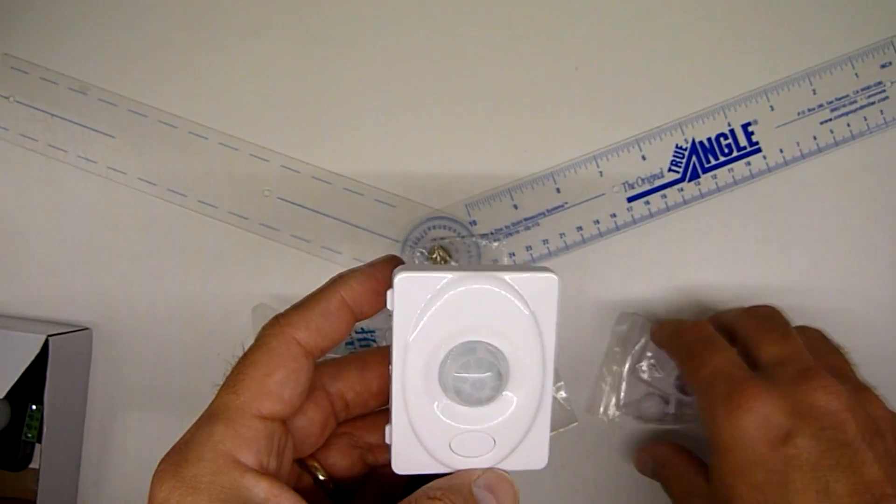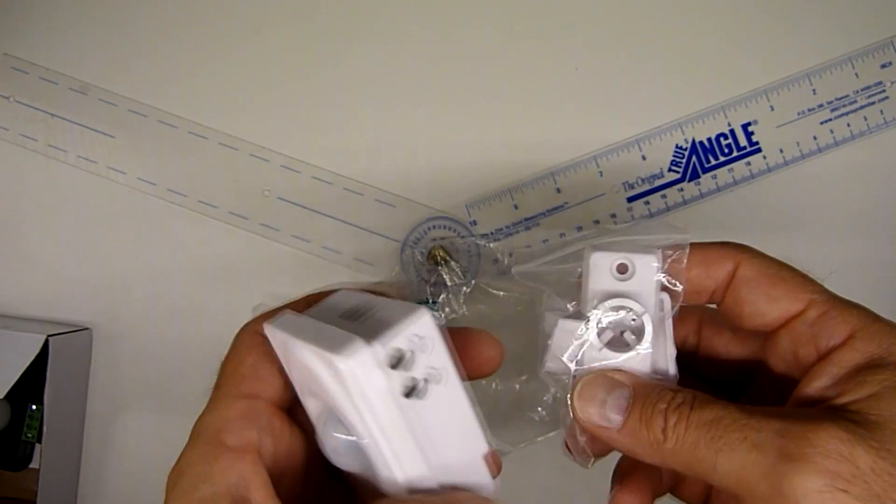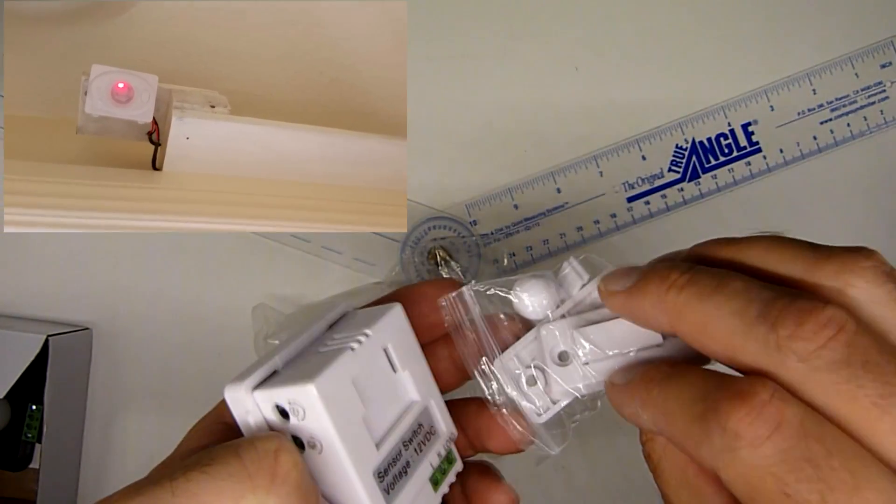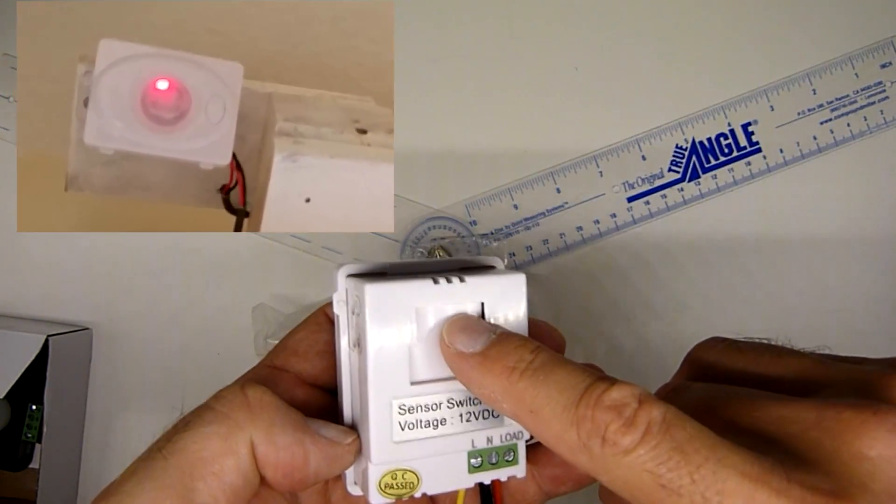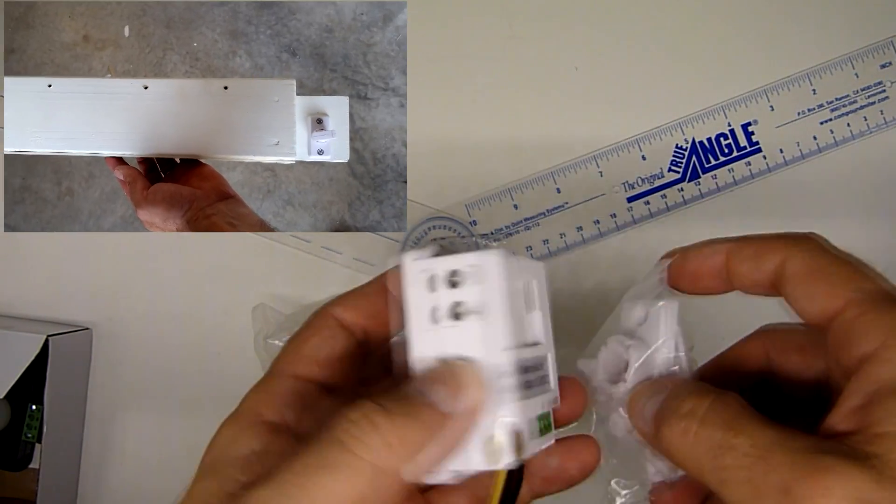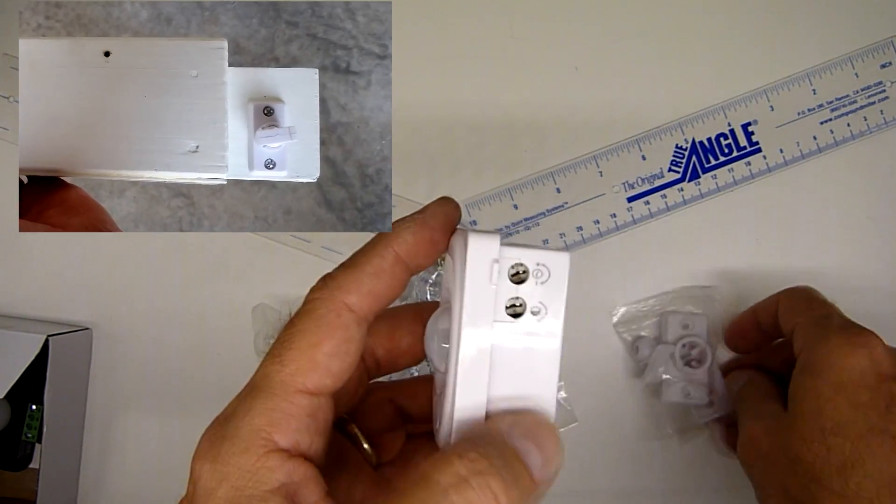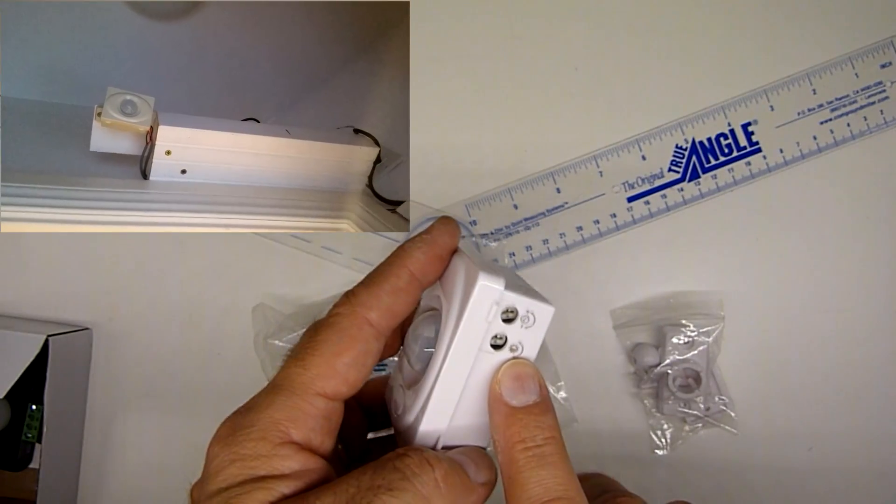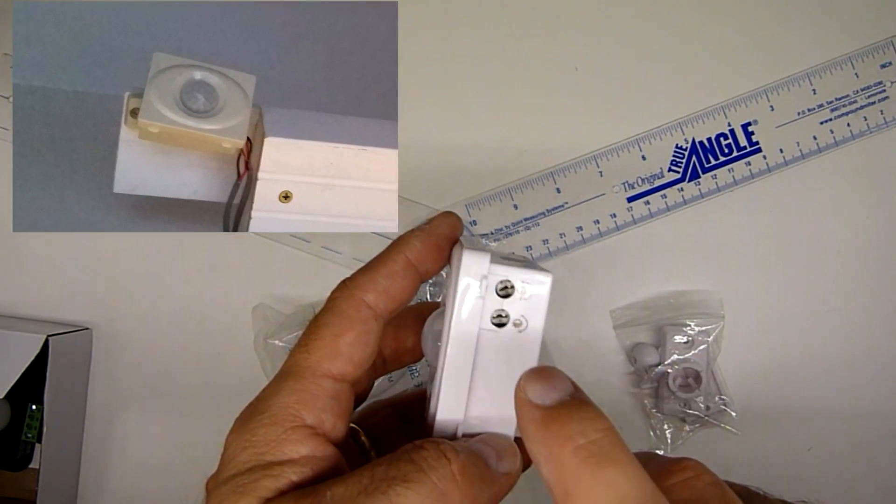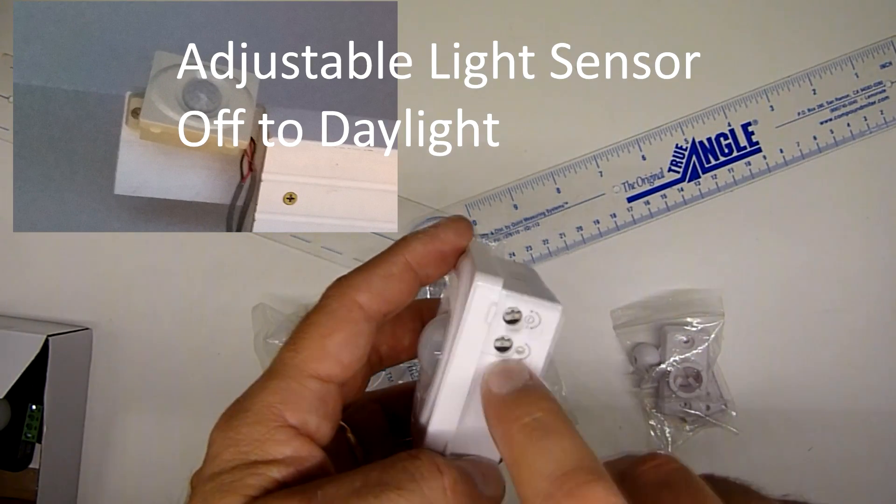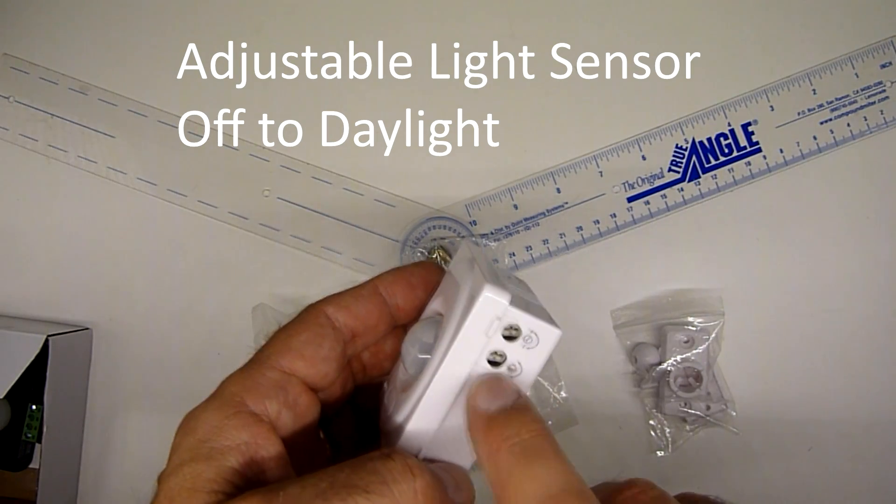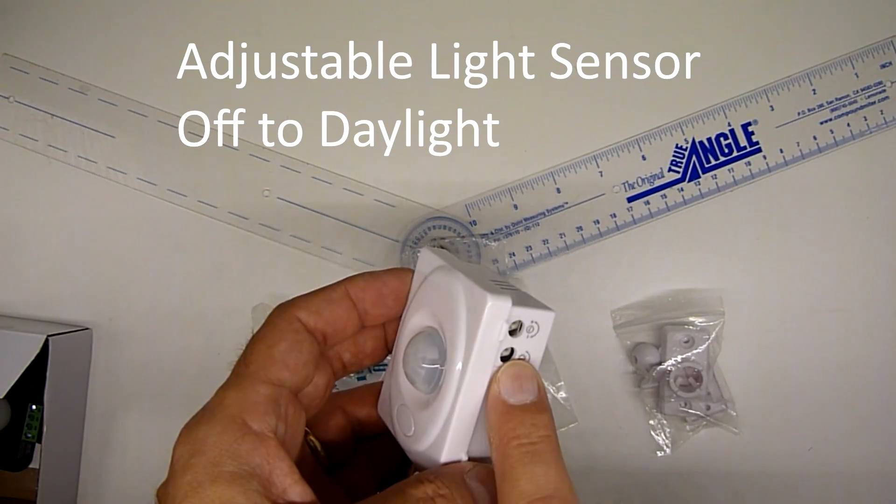Now the really nice feature about this one, it comes with a swivel attachment and a flat attachment, and that slides right into the bracket here. So it gives you adjustability. The other nice feature about this one is it has an adjustable light feature. So if you want to put this in place where you didn't want it to turn on during the day, you can tune that in.